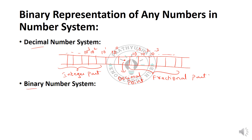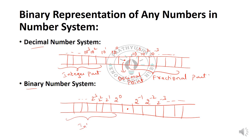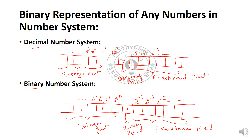For the binary number system, since binary is represented with base 2, on the right side of the binary point we have 2 to the power of minus 1, minus 2, minus 3, and so on. On the left side we have 2 to the power of 0, 1, 2, 3, and so on. The left side represents the integer part and the right side the fractional part, separated by the binary point.